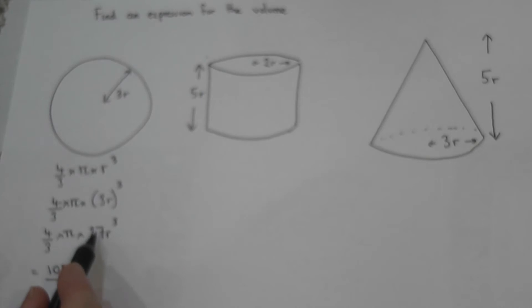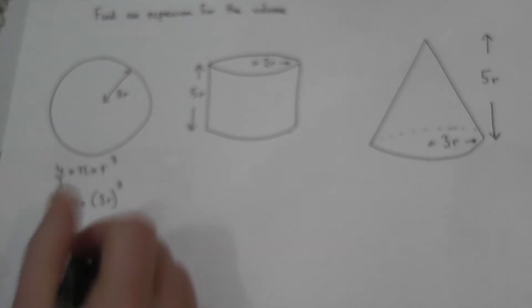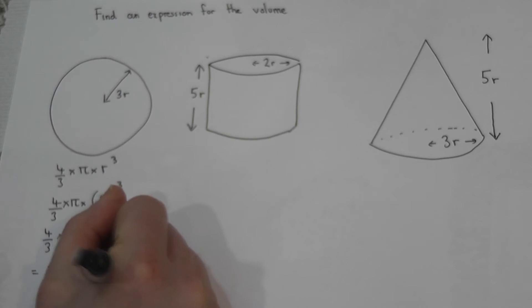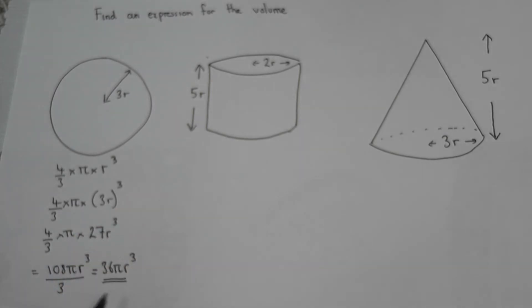So 4 times 27 over 3 pi r cubed. Sometimes this does also cancel down. 3s in 108 is 36 pi r cubed. And this is a simplified expression for the volume of this sphere.